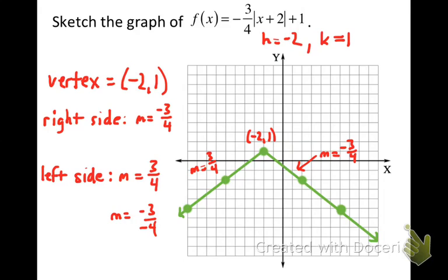Now you know how to graph an absolute value function. You need to know where the vertex is — use the values of H and K for that. You need to know the slopes of the two sides — use the value of A. With all that information, it's very easy to make the graph. Thanks for your attention — hope this works well for you. See you next time.